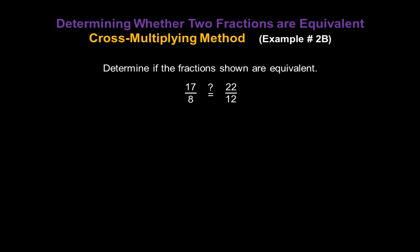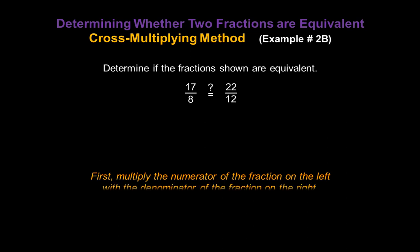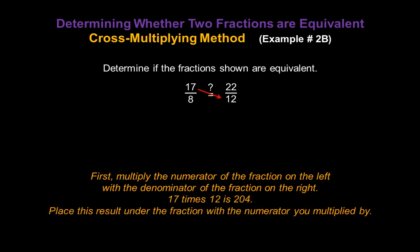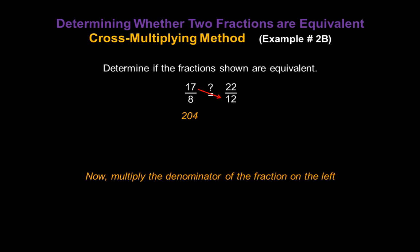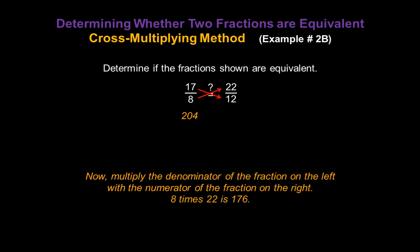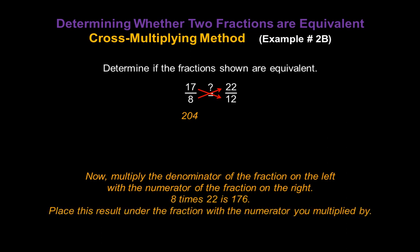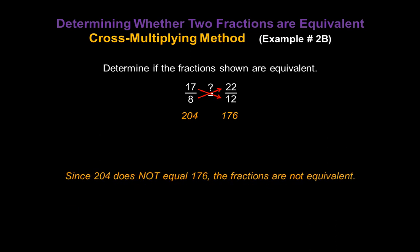Let's do another example — check if 17 over 8 is equal to 22 over 12. First, multiply the numerator of the fraction on the left, which is 17, with the denominator of the fraction on the right, which is 12. 17 times 12 is 204 — place this result under the left fraction. Now multiply the denominator of the left fraction, the 8, with the numerator of the right fraction, the 22. 8 times 22 is 176. Now compare products: since 204 does not equal 176, the fractions are not equivalent. 17 over 8 does not equal 22 over 12.